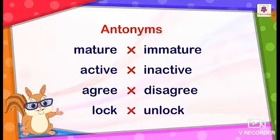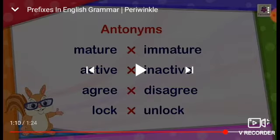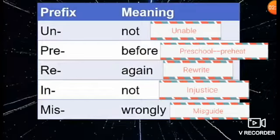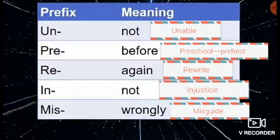A prefix can also make antonyms or opposite words — for example: mature/immature, active/inactive, agree/disagree, lock/unlock. Here are some prefixes and their meanings: 'un' means not, so 'unable' means not able. 'Pre' means before — preschool means before school, and preheat means to heat something before cooking it in a microwave or oven. 'Re' means again — rewrite means to write again, rearrange means to arrange again.